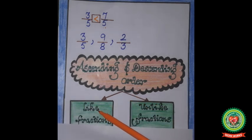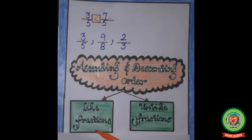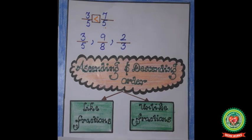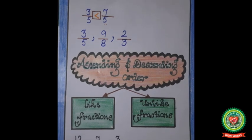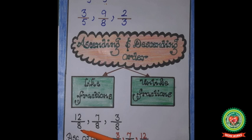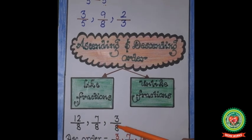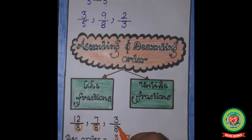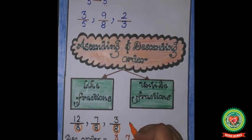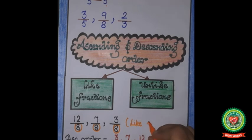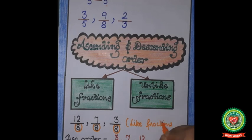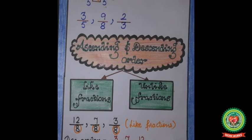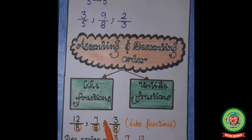First, we will do when like fractions are given, and then when unlike fractions are given. Let's take one example with like fractions: 12 upon 8, 7 upon 8, and 3 upon 8. The denominator is 8, which is the same in all three fractions, so these are like fractions.